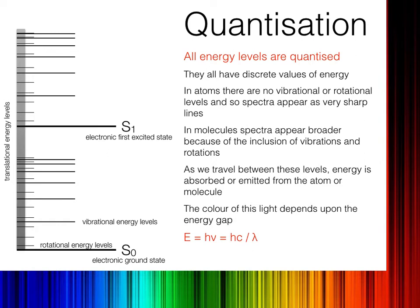I have my electronic energy levels, which have the largest separation. This is looking at things like we saw in the Balmer series before — transitions between different types of orbitals in an atom. I also have vibrational energy levels; you've probably already done a little bit about this with things like infrared. Lower in energy than vibrational energy levels are rotational energy levels. Even rotations, even moving around an axis in a molecule, is quantized.